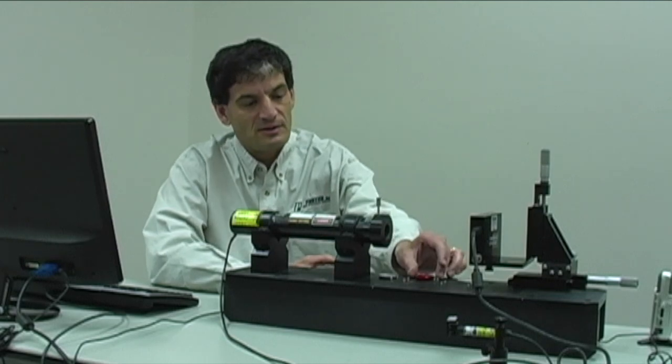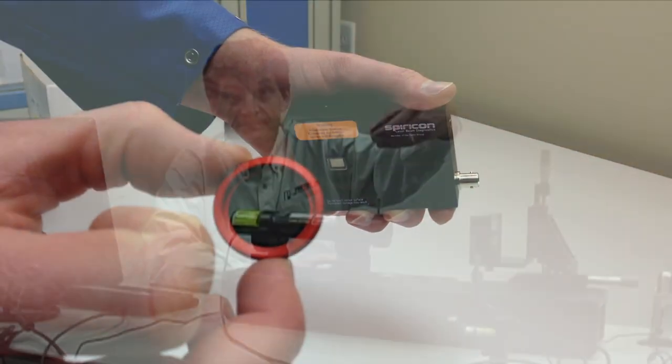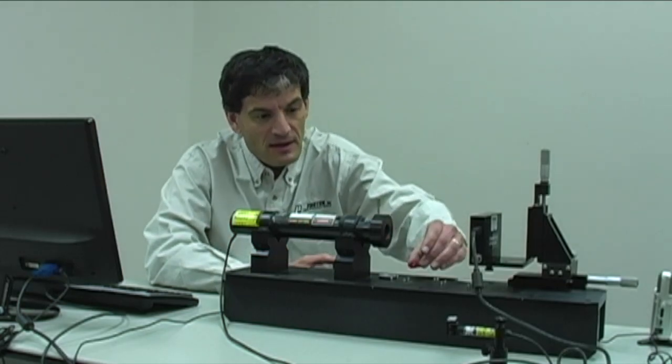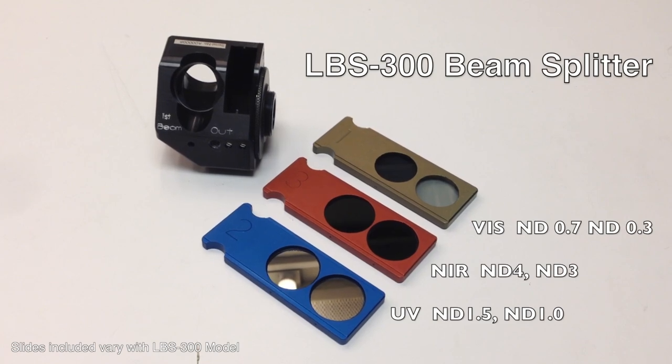There's a couple different types of beam attenuation. One is a neutral density absorptive filter like this, which simply absorbs the light—works like a pair of sunglasses. The other way is using some sort of front surface reflection called an LBS 300.